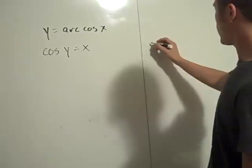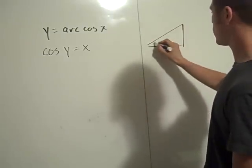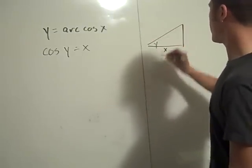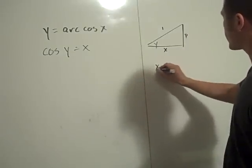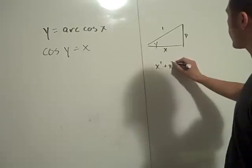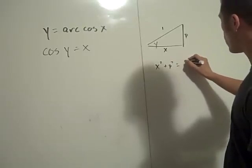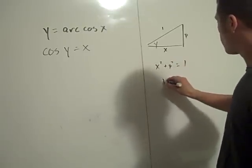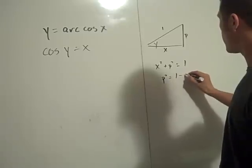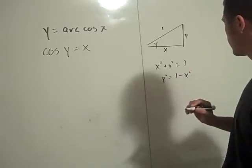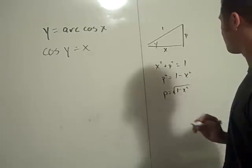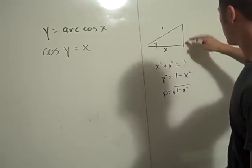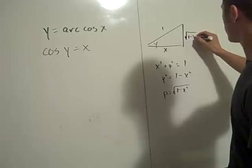So if you think about our triangle here, here's my right triangle, here's y, this is x, this is 1, and this is my P. So x squared plus P squared equals 1. And so P squared equals 1 minus x squared. And so P is the square root of 1 minus x squared. So this is the square root of 1 minus x squared.